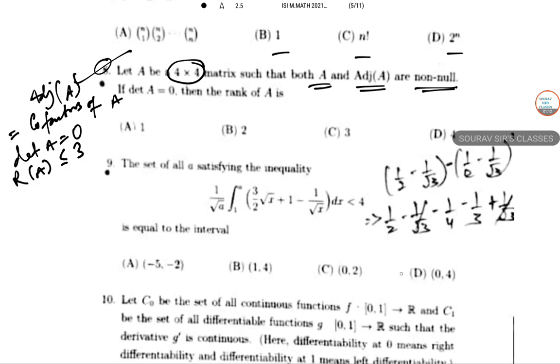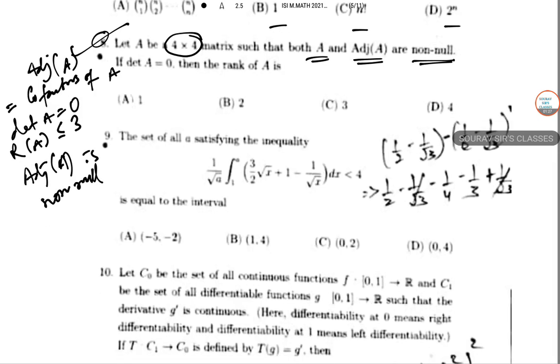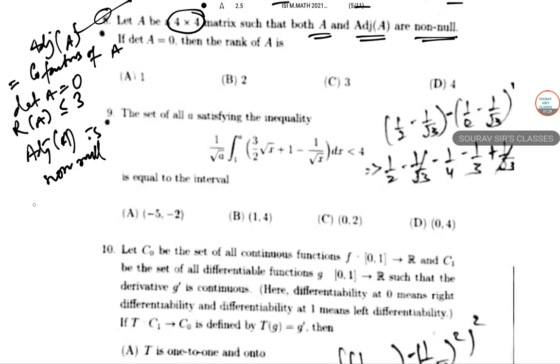That is not equal to 0. So there is at least one non-zero 3 cross 3 minor.